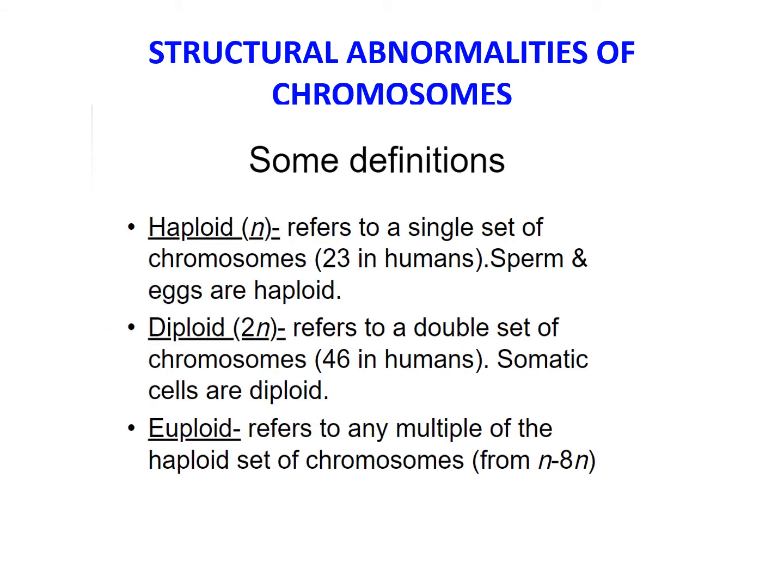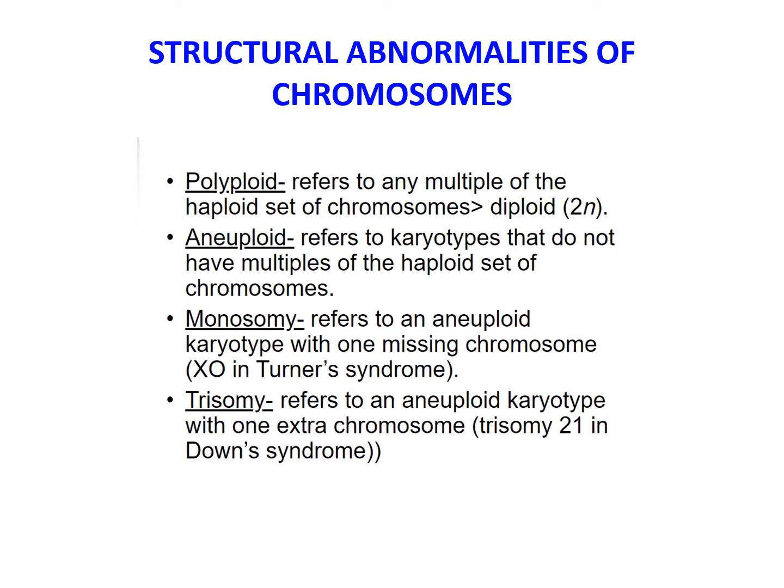Some more definitions: haploid refers to a single set of chromosomes, which is 23 in humans, found only in sperm and eggs. Diploid refers to a double set of chromosomes, which is 46 in humans, so somatic cells are diploid. Euploid refers to any multiple of the haploid set of chromosomes. A polyploid refers to any multiple of the haploid set of chromosomes. Aneuploid refers to karyotypes that do not have multiples of the haploid set. Monosomy refers to an aneuploid karyotype with one missing chromosome, and trisomy refers to an aneuploid karyotype with one extra chromosome — the best example being trisomy 21 in Down syndrome.